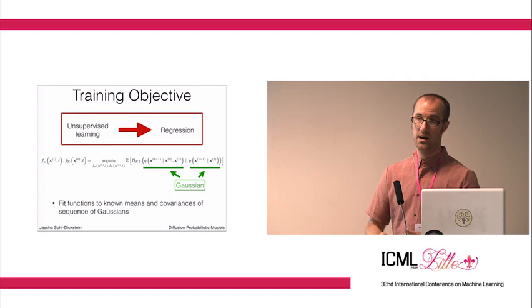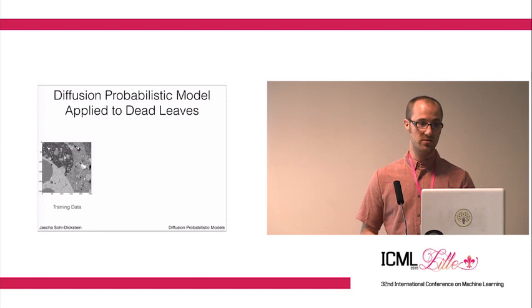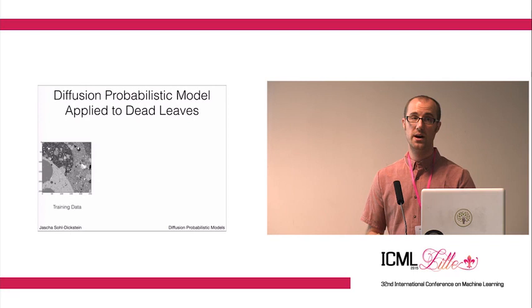You can do the similar thing for binomial diffusion, although I'm not going to talk about it here. So how does it work? We're about to apply this to some natural image data sets. One very common data set that people work with in natural images is the dead leaves data set which is nice because we understand exactly how it was constructed.